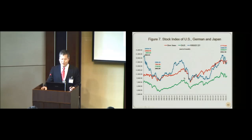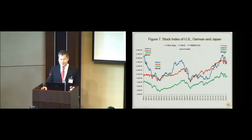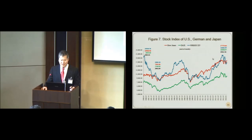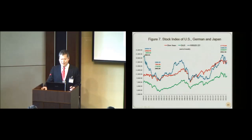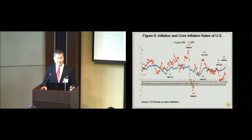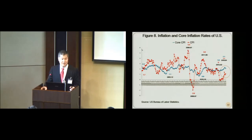For the stock market in the United States, before the crisis the peak level was around 13,000 points, but now it's more than 70,000 points. So maybe market fundamentals cannot support such a strong stock market. Regarding inflation pressure, CPI is not strong — only 1.1%. However, core inflation has been showing more than 2% for several months. This implies there may be inflation pressure in the future.